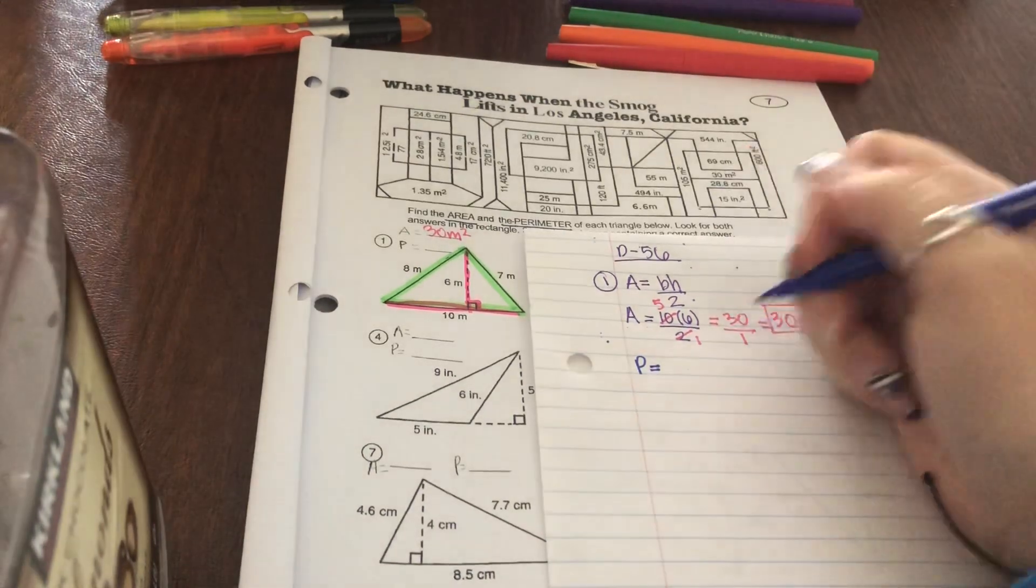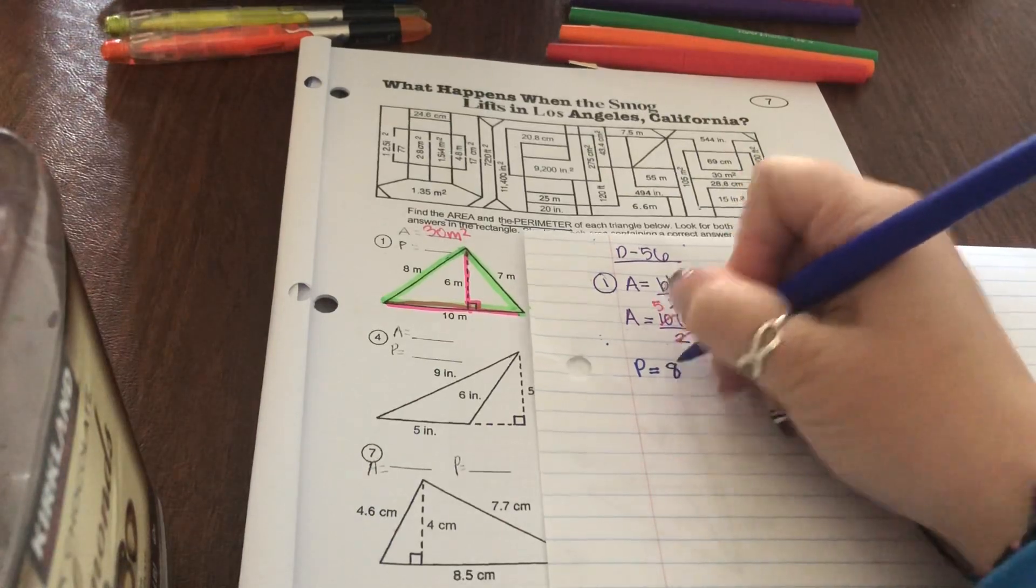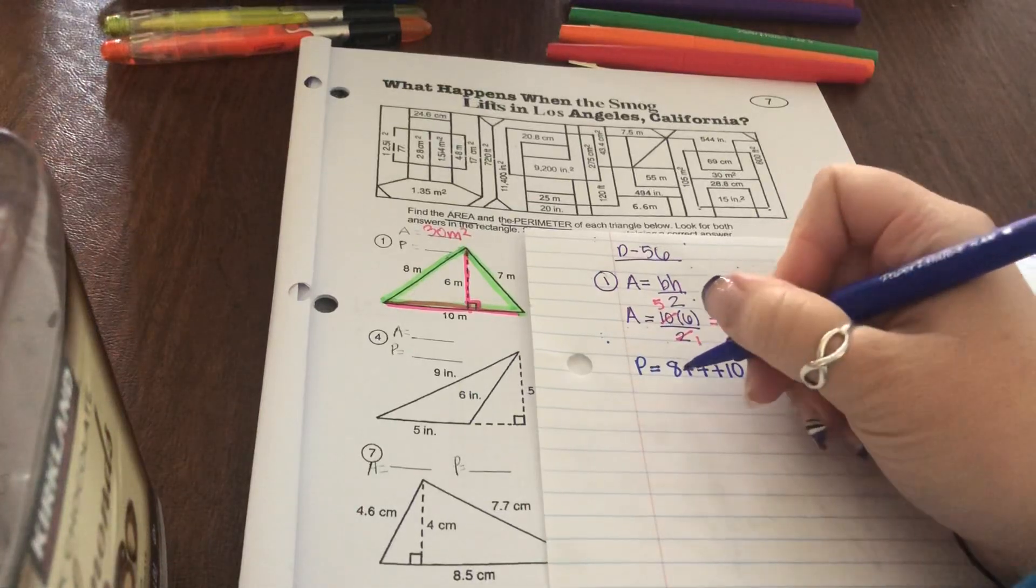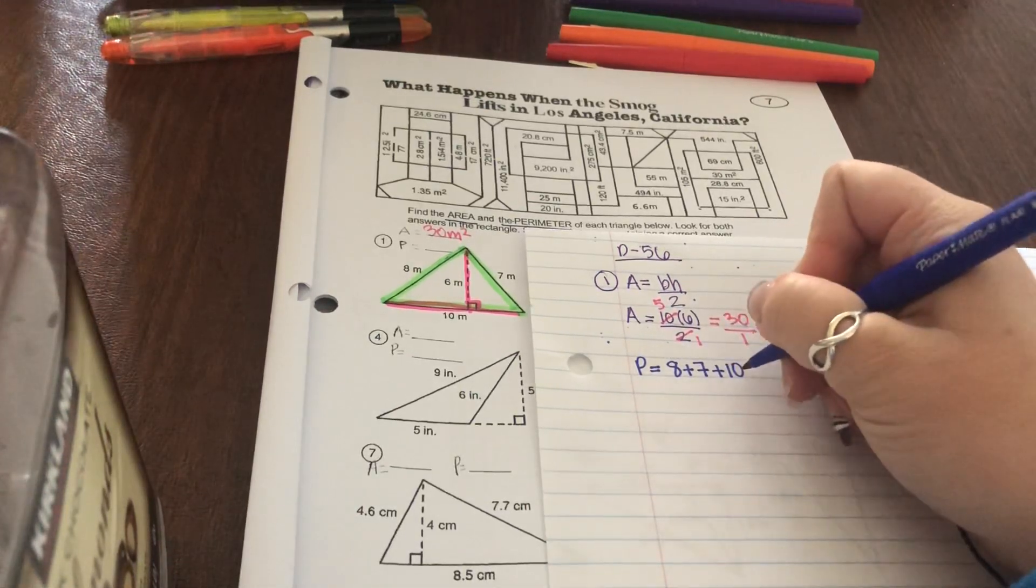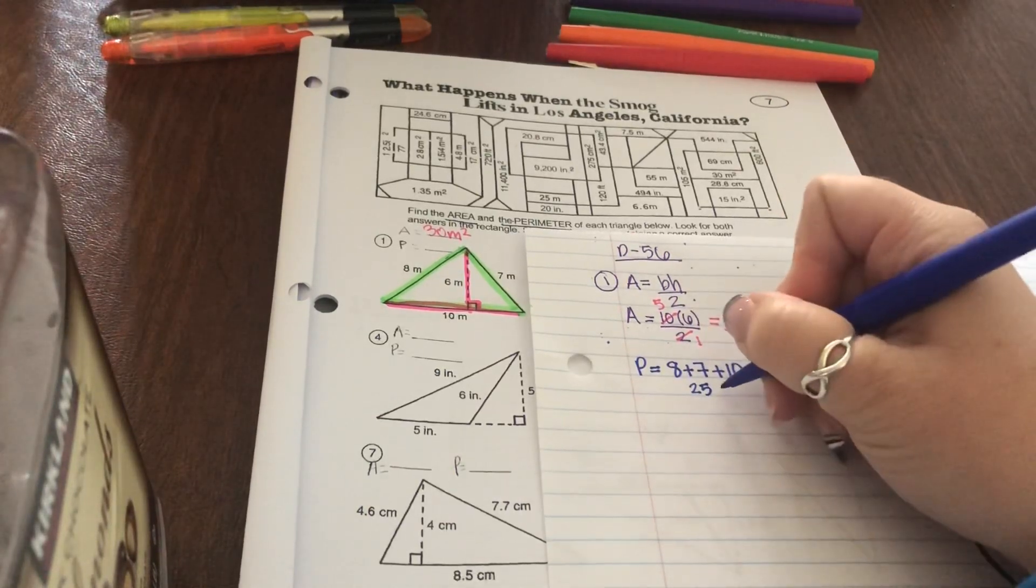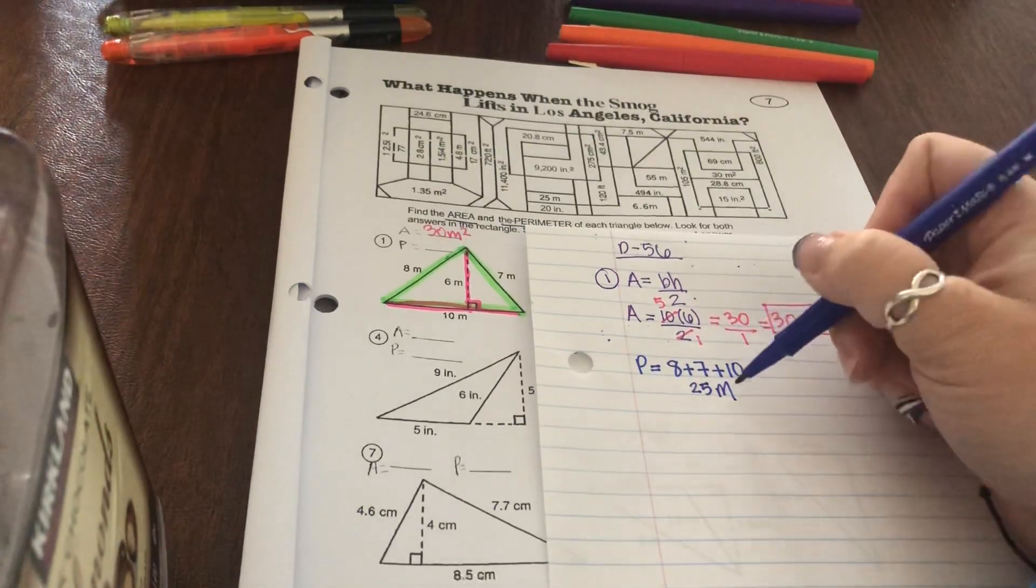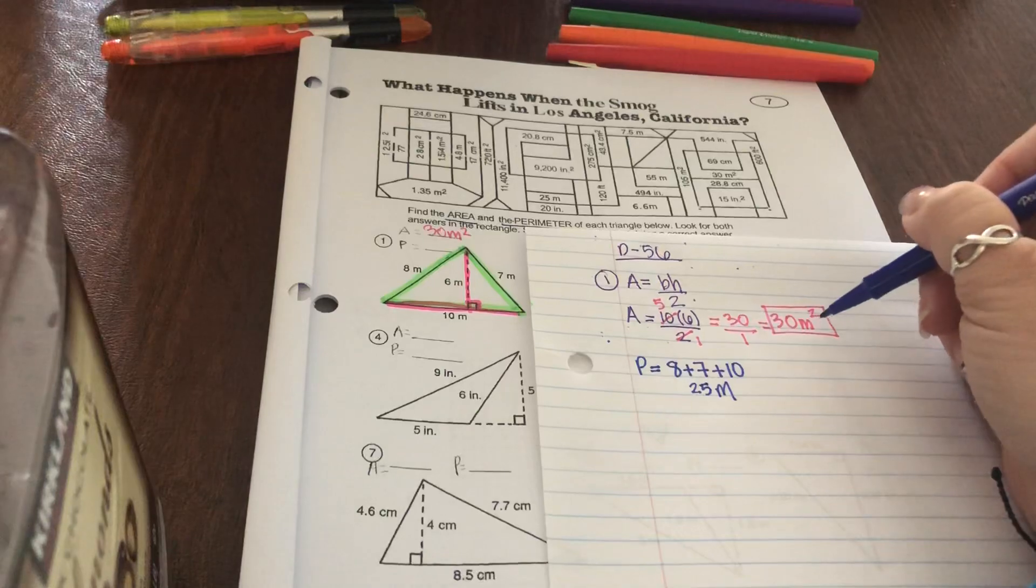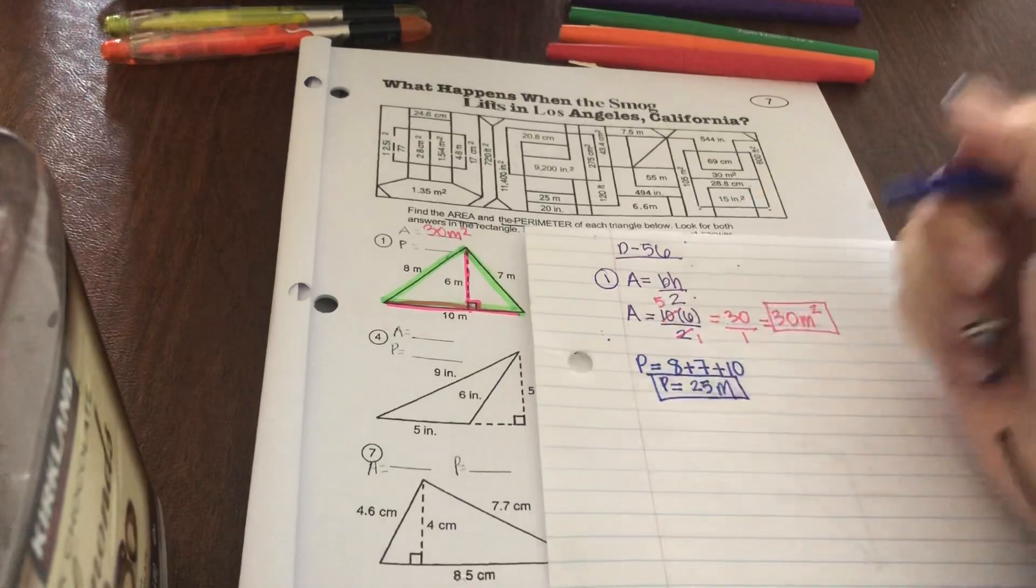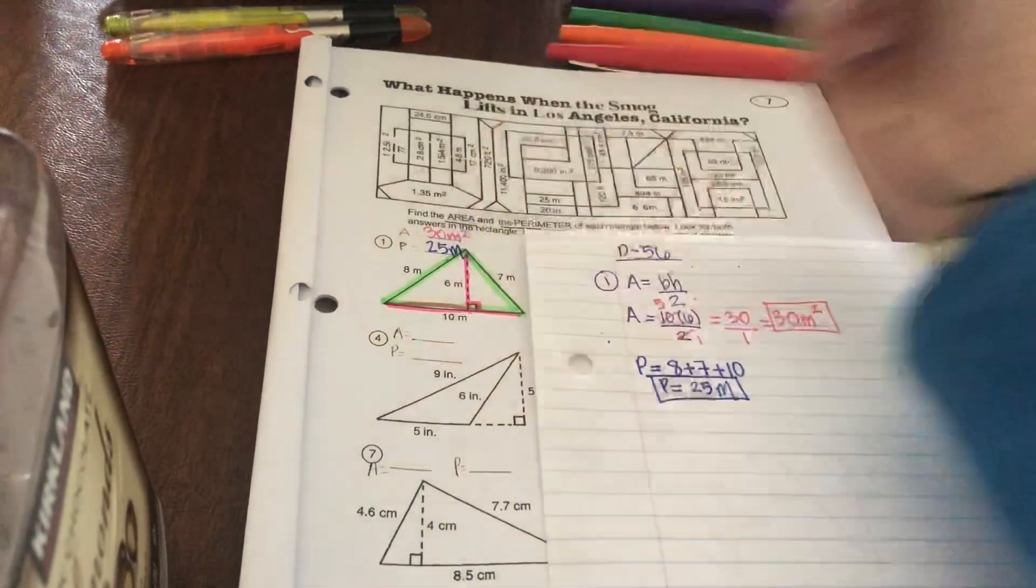Now for perimeter there's not really a formula. You just add all the numbers that make up the outside. So 8 plus 7 plus 10. Go ahead and add those together. 8 plus 7 is 15, 15 plus 10 is 25. So I have 25 meters. For perimeter it's just meters. For area it's meters squared. There's my work. Yes you can use a calculator for this and then go ahead and write 25 meters for your perimeter.